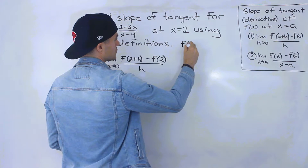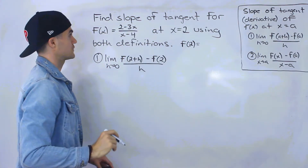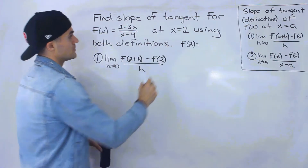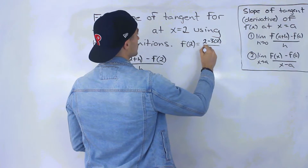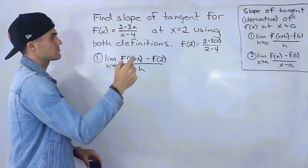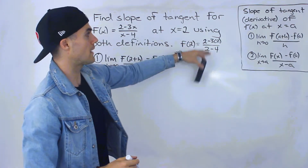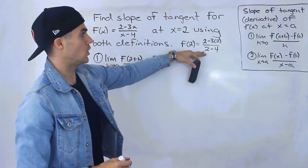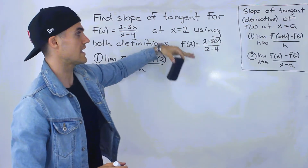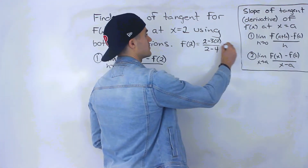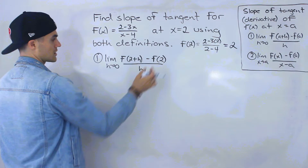Now what is f(2) going to equal? We're actually going to use f(2) in both definitions. So f(2) would be 2 minus 3 times 2, all over 2 minus 4 — just plugging in 2 for x. That gives us 2 minus 6, which is negative 4, over 2 minus 4, which is negative 2. So negative 4 over negative 2 gives us positive 2.